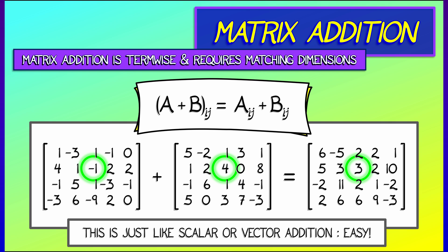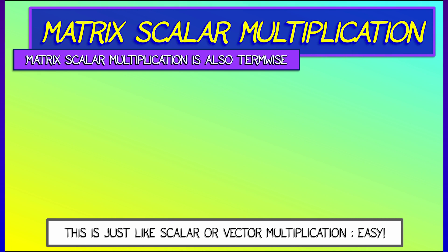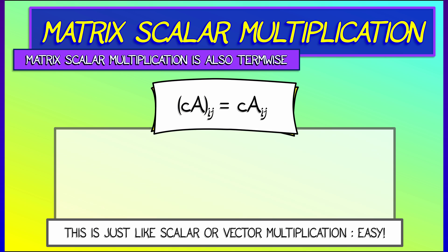Likewise, we can do matrix scalar multiplication. This also acts term-wise. That means I take the i comma jth entry and I multiply it by our fixed scalar.